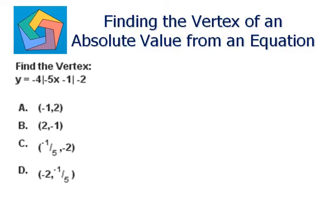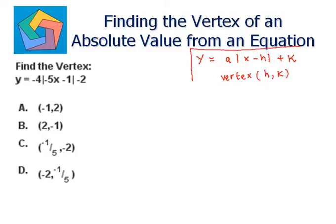Find the vertex: y is equal to negative 4 times absolute of minus 5x minus 1, absolute, minus 2. Now, the vertex of an absolute value equation uses the form y equals a times absolute of x minus h plus k. This is the vertex form of any absolute value equation, and the vertex is given by (h, k). So we will try to convert our equation into this form to find the vertex.